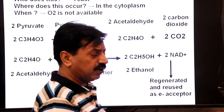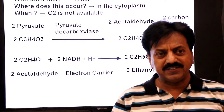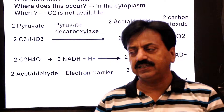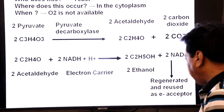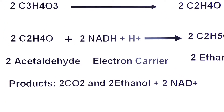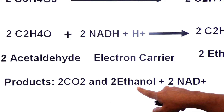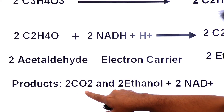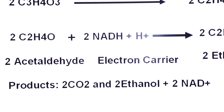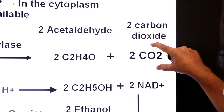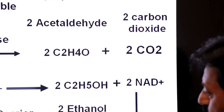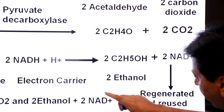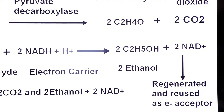The products of alcoholic fermentation in yeast are: two molecules of carbon dioxide, two molecules of ethanol, and two NAD molecules that are regenerated.